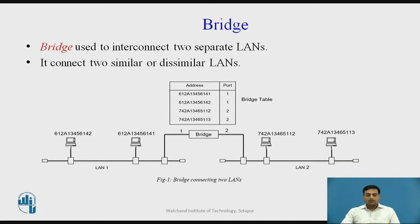Bridges are used to interconnect two separate LANs. The bridge may connect two similar or dissimilar LANs. As shown in figure number 1, a bridge has two ports and it connects LAN1 and LAN2 to each other. LAN1 and LAN2 may be similar — for example, both 10BASE-T — or one could be 10BASE-T and the other 100BASE-T. The key point is that a bridge can connect similar or dissimilar LANs, while a hub connects only similar LAN segments.